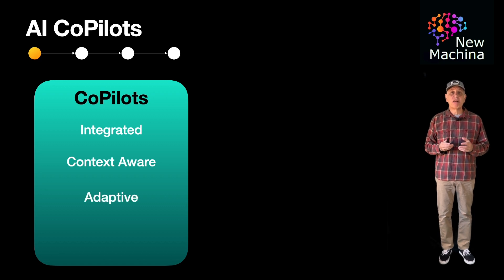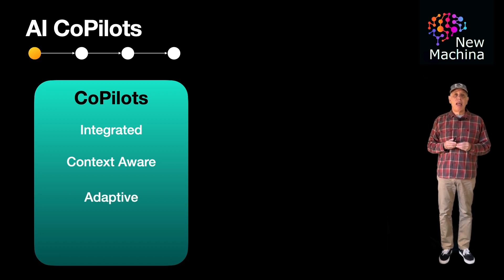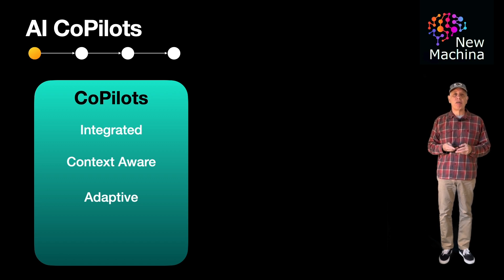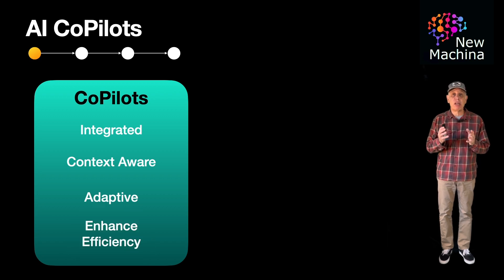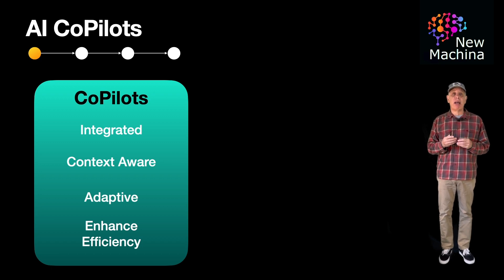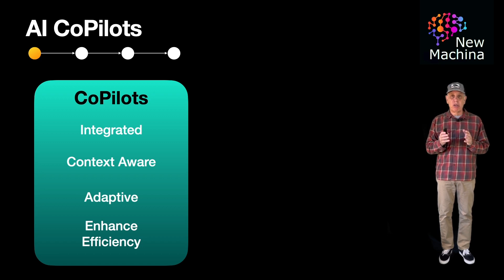AI co-pilots are interactive and adaptive. They interact with users in real time, learning from user feedback and adapting to their preferences and work style. This continuous learning loop helps improve the accuracy and relevance of the assistance provided. AI co-pilots enhance efficiency and creativity by handling routine and time-consuming tasks, allowing users to focus more on complex and creative aspects of their work, thereby enhancing overall efficiency and fostering innovation.